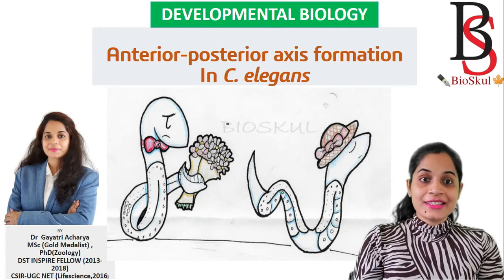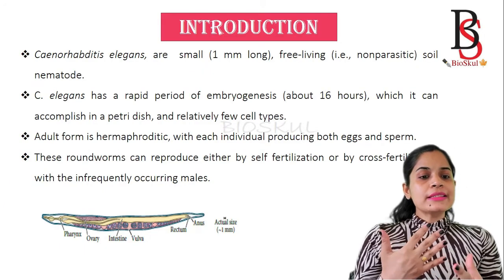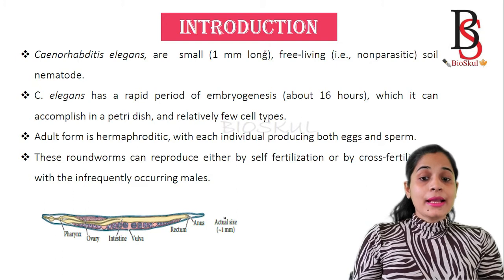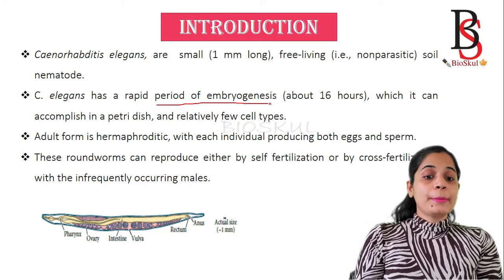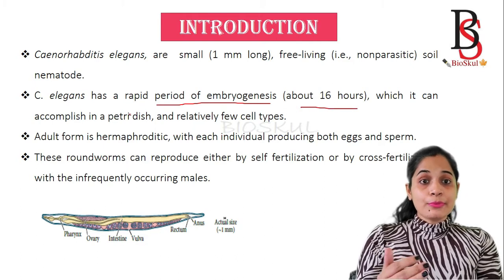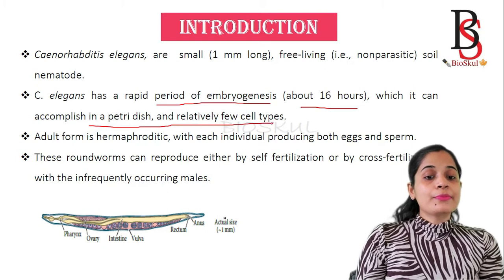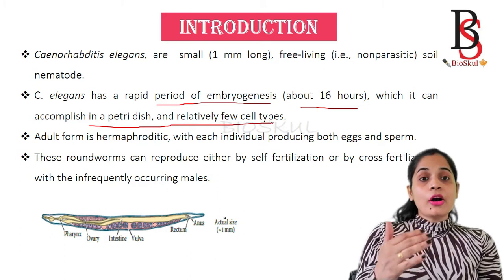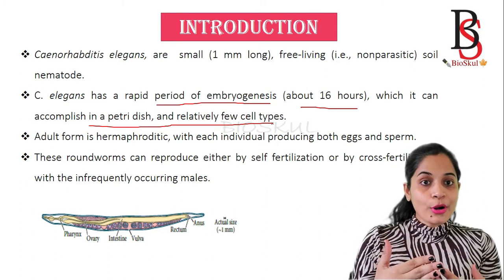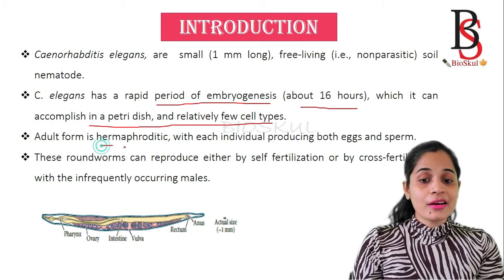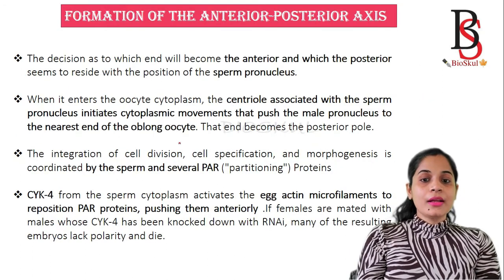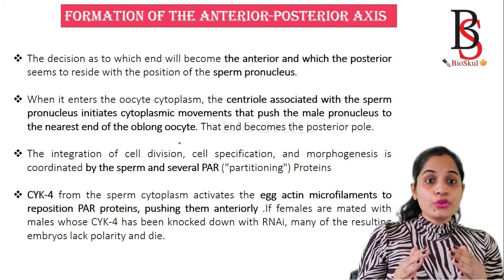C. elegans are free-living soil nematodes, commonly known as roundworms. They are well known for their rapid period of embryogenesis, which is completed within 16 hours and can be carried out in a petri dish. They produce relatively few cell types. In earlier life, C. elegans are males, but later they produce eggs and the adults are known as hermaphrodites, as individuals produce both sperm and eggs.